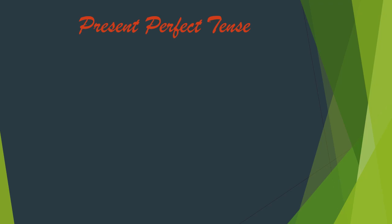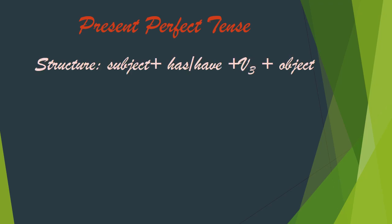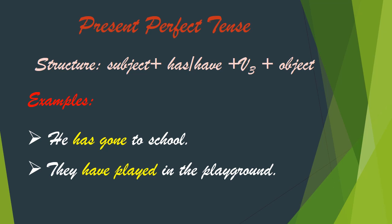Present perfect tense structure is: subject plus has/have plus third form of verb plus object. Let's understand this with two examples: 'He has gone to school' and 'They have played in the playground.' In both examples we use the third form of verb. In the first example, 'he' is the subject, 'has' is the helping verb, and 'gone' is the main verb. In the second, 'they' is the subject, 'have' is the helping verb, and 'played' is the main verb. The use of the helping verb depends on the subject — 'he' is singular so 'has' is used.